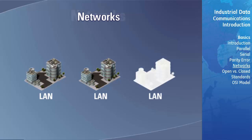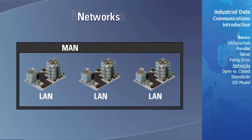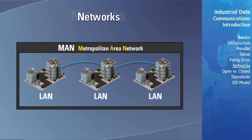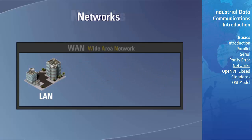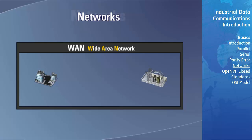A MAN, or Metropolitan Area Network, is formed when the LANs of a group of buildings in close proximity are interconnected together. A WAN, or Wide Area Network, is formed by the interconnection of LANs over a wide area. A typical example of a WAN in a utility application would be the network formed by the interconnection of the substation and control center LANs. The distance between the LANs forming the WAN could be from a few kilometers to hundreds of kilometers.